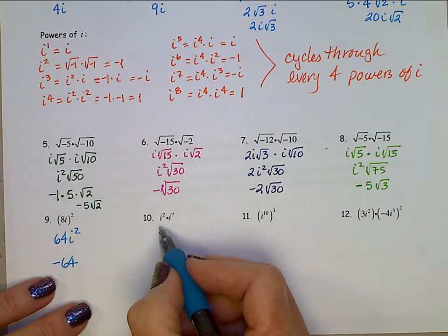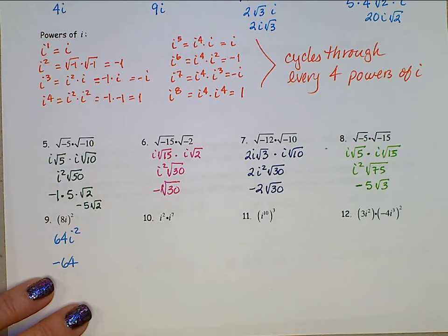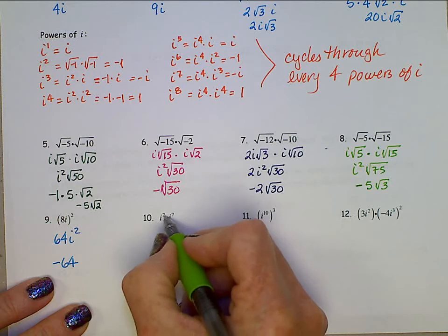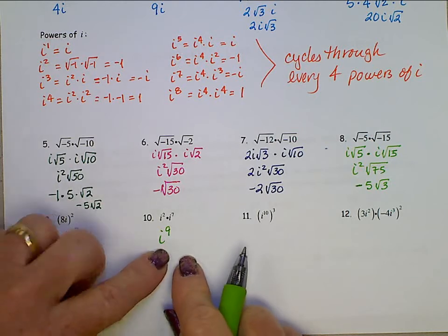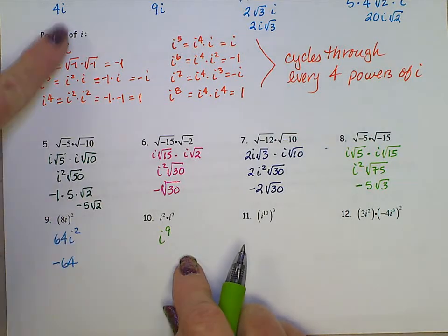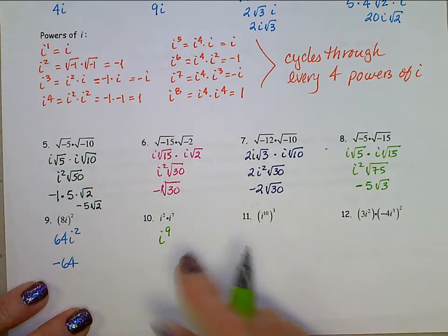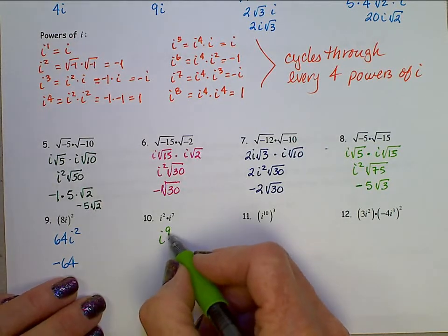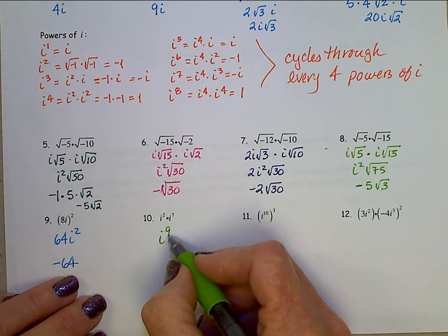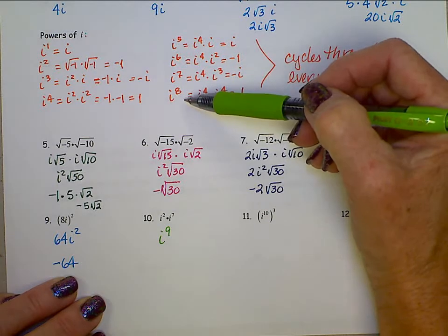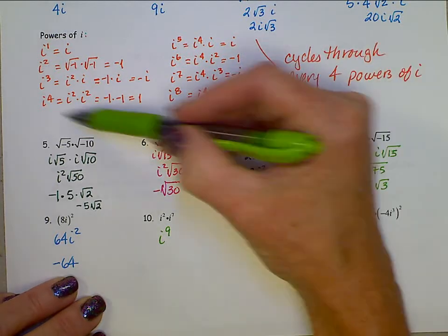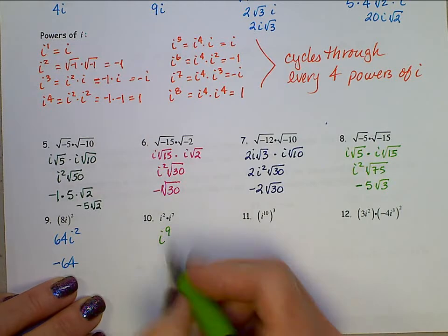For i squared times i to the seventh: when we multiply, we add the exponents, giving us i to the ninth. Since i to a power cycles through every 4, we figure out how many times 4 goes into 9. That's twice with a remainder of 1, which means we cycle through the pattern twice and then end up back at position 1 — so this is just i.